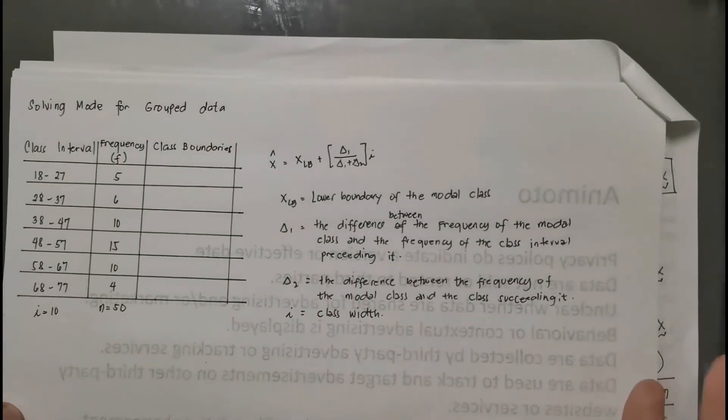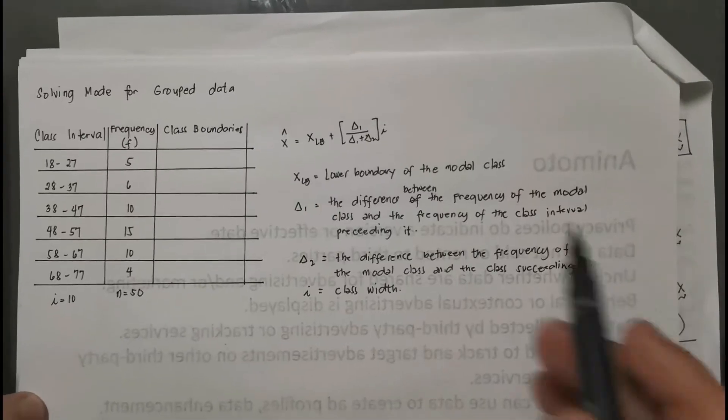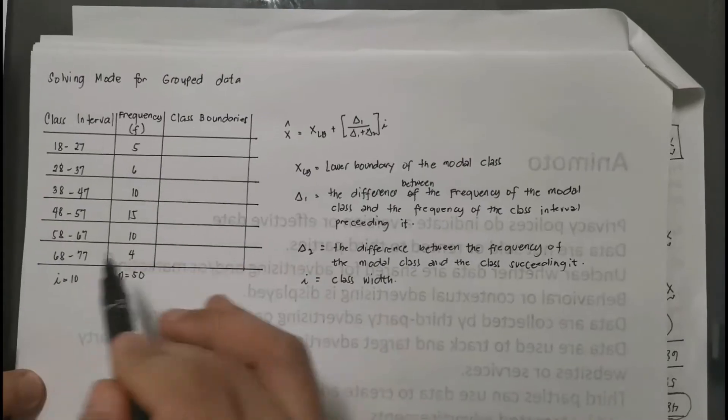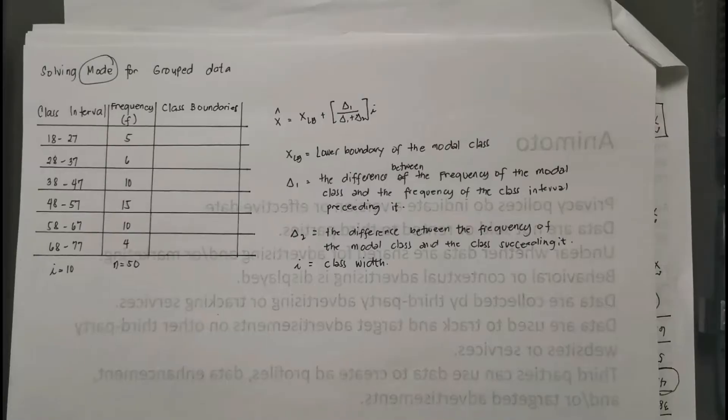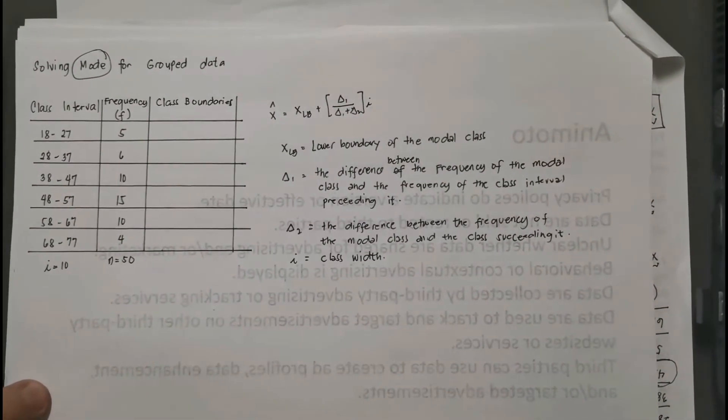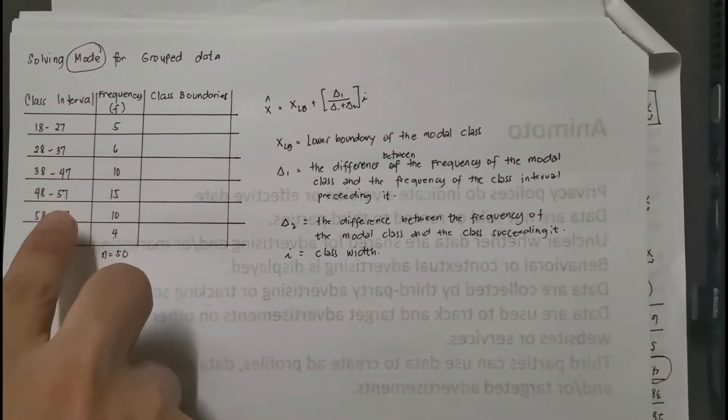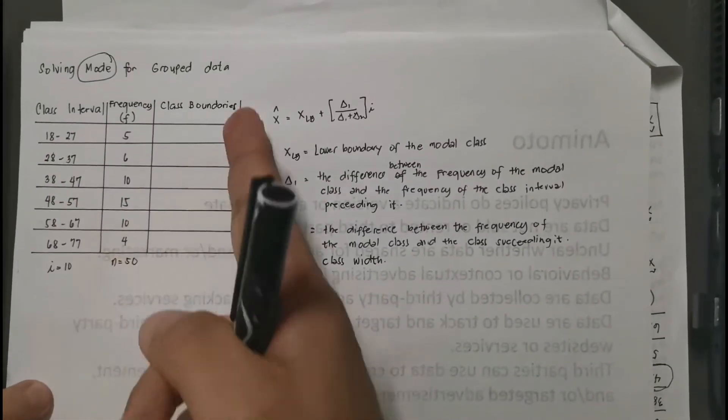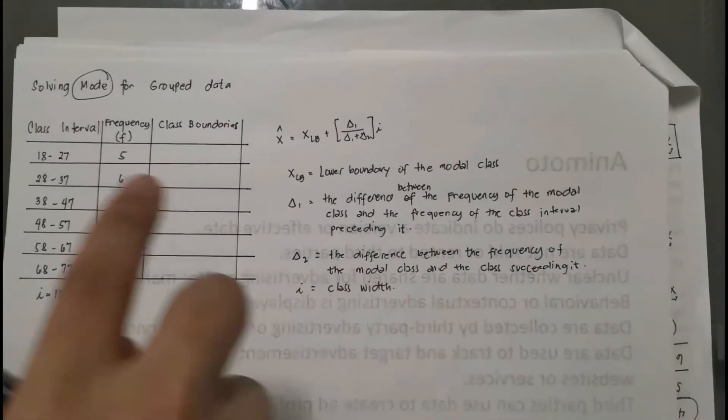Okay, here is our example for solving mode for grouped data. This is our given frequency table or given data set, grouped data set, and we will solve now the mode. So first you notice that I leave one column blank which is the class boundary. So supposing that in the given activity we have class interval and frequency, now we need to have the class boundaries of a data set in order to solve for the mode.